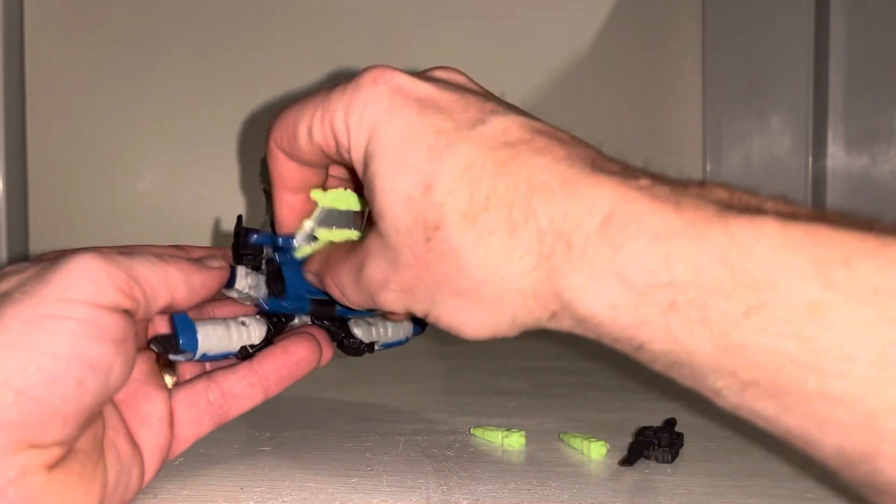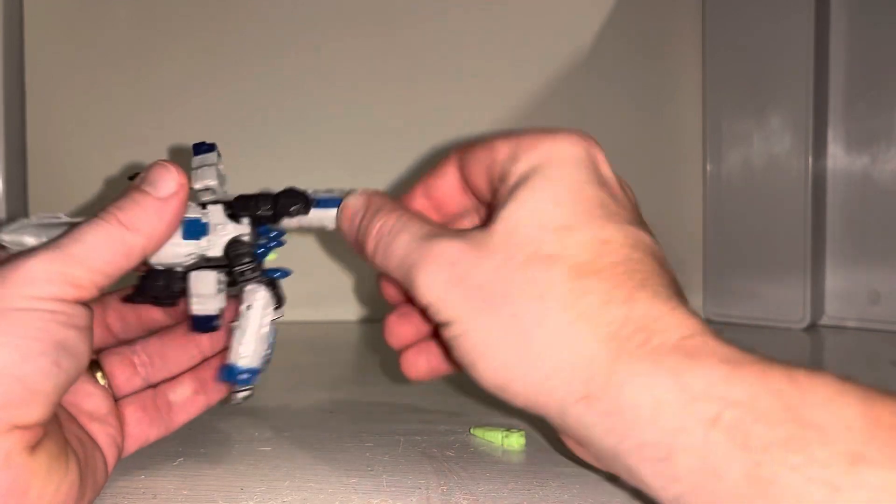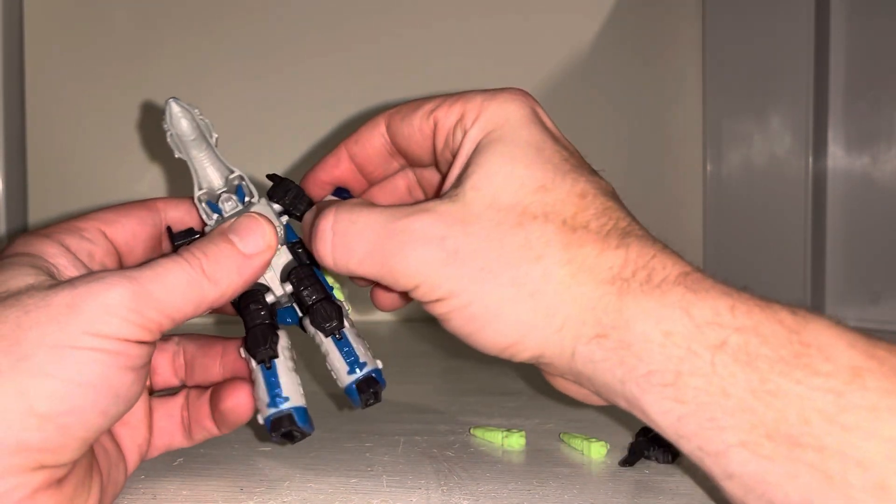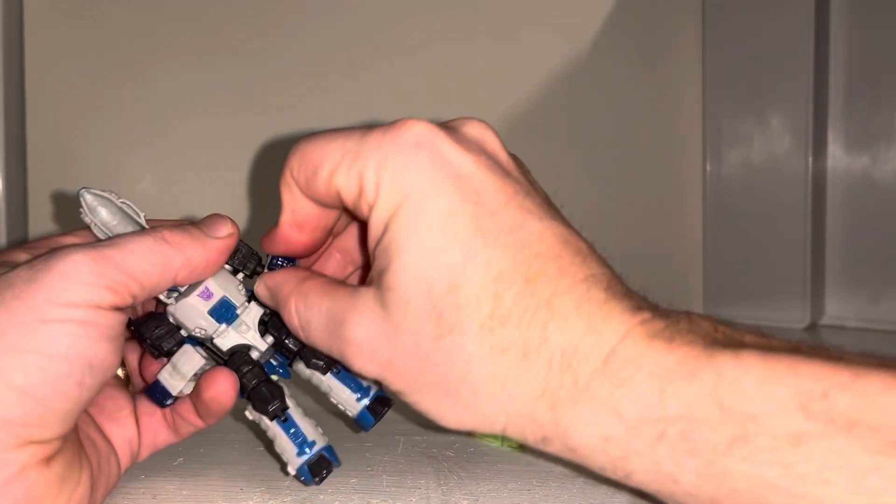Then bring this down, turn it at the hip, pull the feet out. Bring it down, turn it at the hip, pull the feet down. Pop the tab off there - the tab rather, just at the top, at the hinge of the shoulder. It's not really a hinge, it's a ball and socket. Open that.